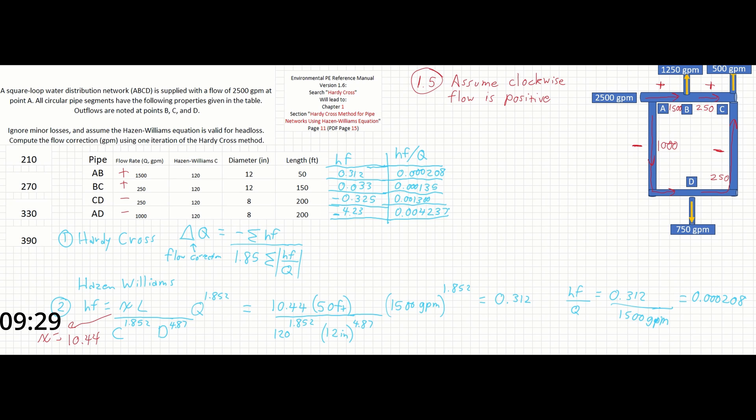Now that we have all of the head losses for each pipe in the network, we can sum them up and solve for the Hardy Cross flow correction factor. The sum of all the head losses is going to come out to negative 4.217 according to our convention. And the sum of the head losses over the flow is going to come out to 0.0059.